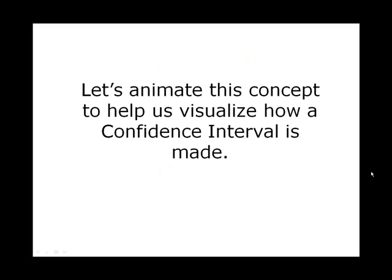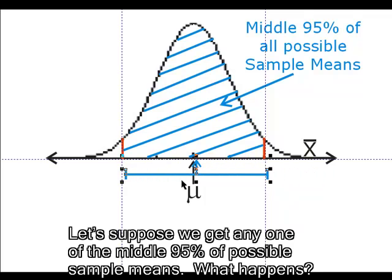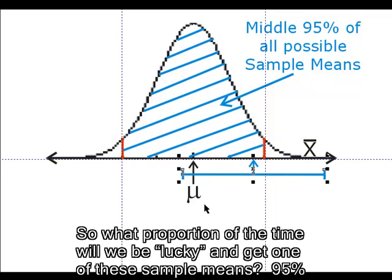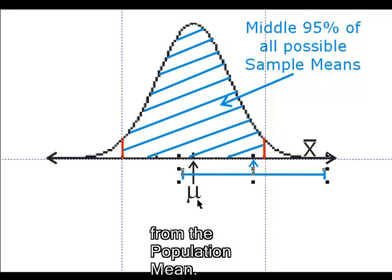Let's animate this concept to help us visualize how a confidence interval is made. Let's suppose we get any one of the middle 95% of possible sample means. What happens? The confidence interval will contain the population mean in it somewhere. So what proportion of the time will we be lucky and get one of these sample means? 95% — remember, 95% of all the possible sample means are within two standard errors from the population mean.